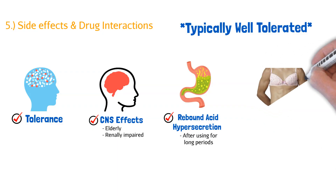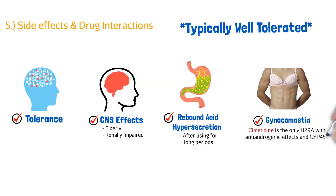The last side effect is gynecomastia, specifically associated with cimetidine. It's the only H2RA with an anti-androgenic effect and multiple CYP450 inhibitions. The reason it can cause gynecomastia in men is that it can inhibit estrogen breakdown — so estrogen that is naturally in the body is not metabolized, potentially leading to gynecomastia.